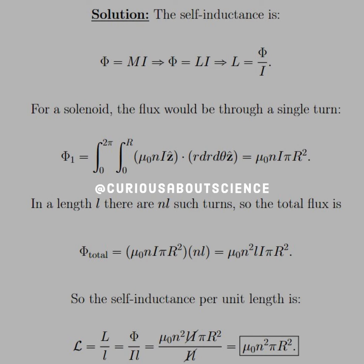Now if we have length L, we know there's going to be NL such turns per length L, so we just multiply that to find the total flux, and we see that you get μ₀N²LI·πR².